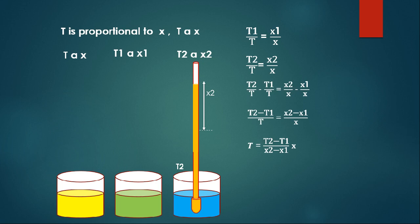This equation says that the unknown temperature T can be measured if I know the variables on the right-hand side — that is, T2 and T1. I took two liquids, one in green and one in blue. T2 and T1 are the temperatures of those two bodies.